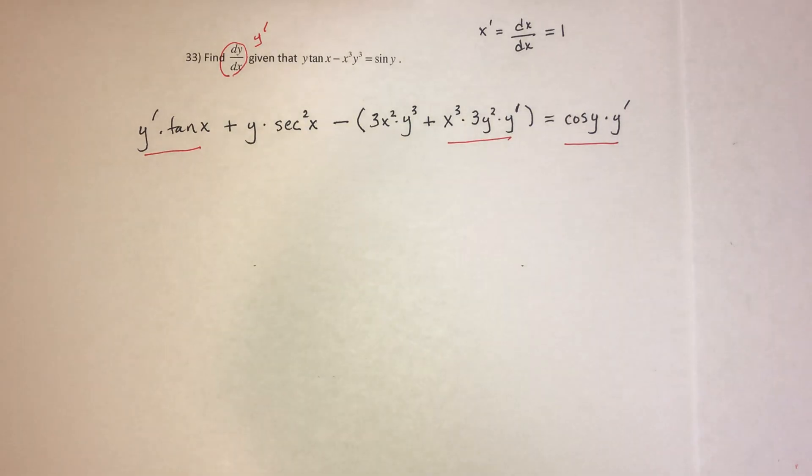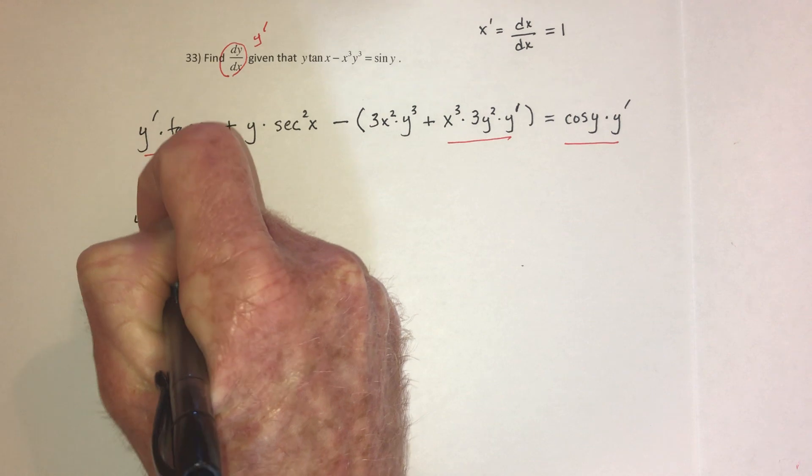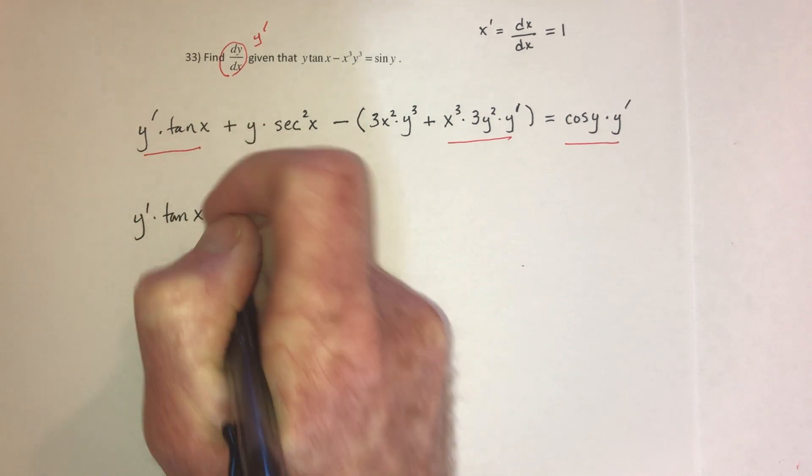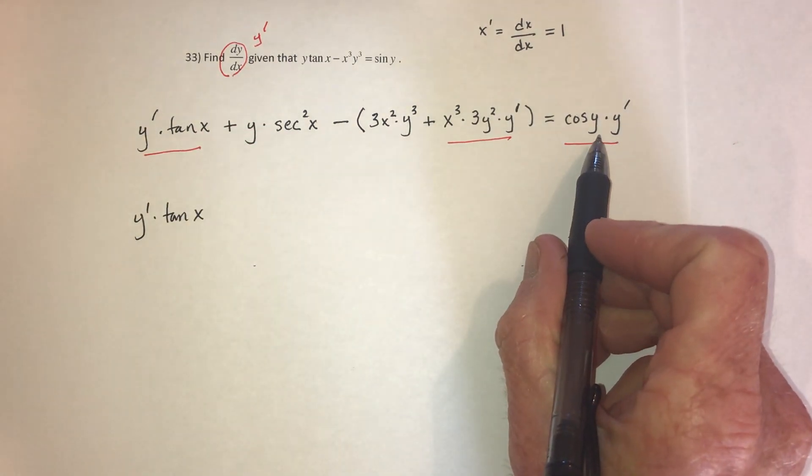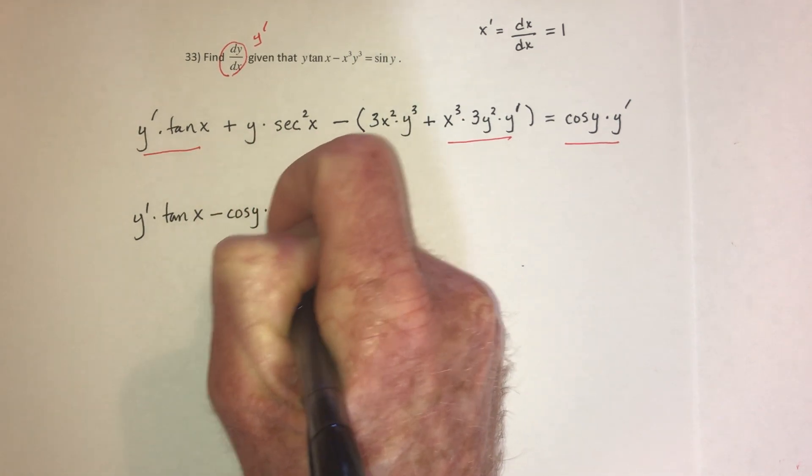So I'm going to put everything with y prime on the left side. So I'll subtract this term. There's already y prime tangent of x. Then I'm going to subtract this from both sides. So minus cosine of y times y prime.